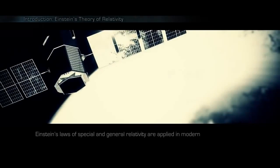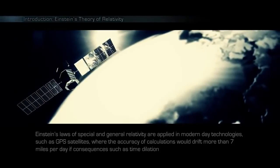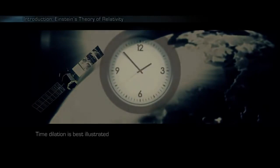Einstein's laws of special and general relativity are applied in modern-day technologies, such as GPS satellites, where the accuracy of calculations would drift more than 7 miles a day, if consequences such as time dilation would not be taken into account.